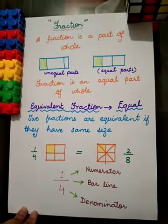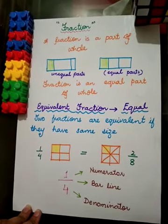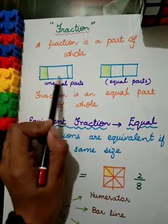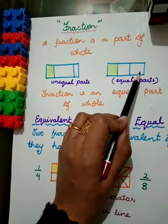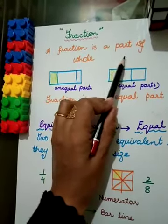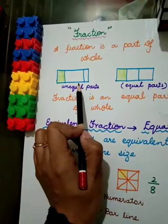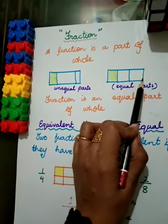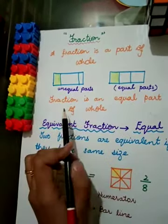Let's start our topic. Fraction is a part of whole. You can see a whole rectangle shape having three pieces, and also another rectangle bar having three pieces. These are the whole shapes. Now, the shaded part — is it a fraction? No, because those are unequal parts. The shaded part of the equal parts can be called a fraction.